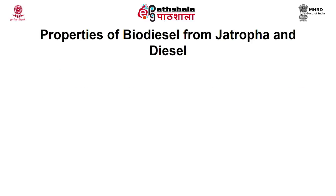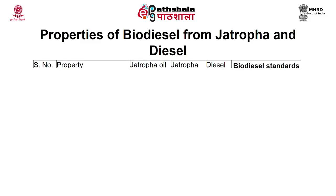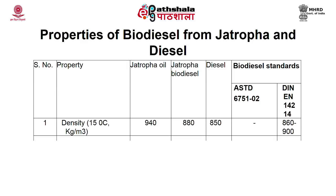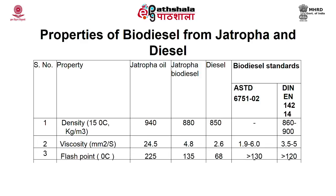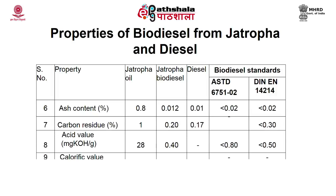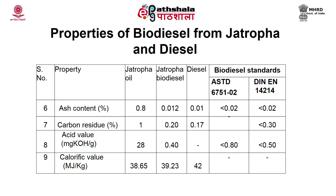A comparison table shows the properties of biodiesel and diesel. The biodiesel is produced from Jatropha, so you can compare Jatropha oil, Jatropha biodiesel, and diesel across properties like density, viscosity, flash point, pour point, water content, ash content, carbon residue, acid value, and calorific value. The calorific value of biodiesel is slightly less than diesel, around 39 megajoules per kilogram.